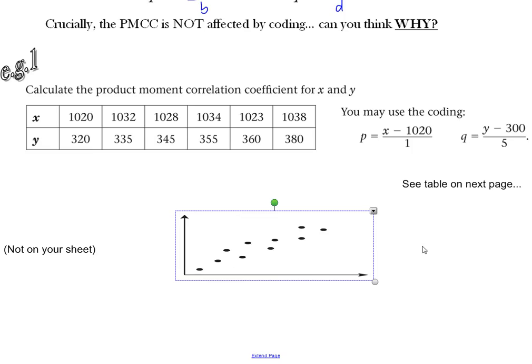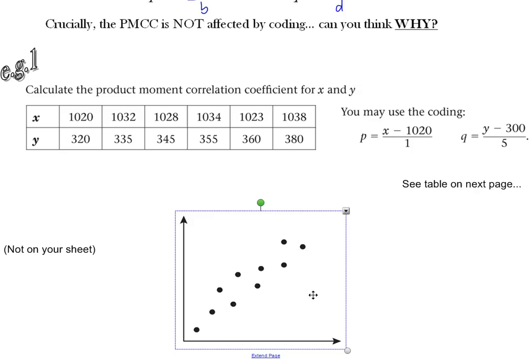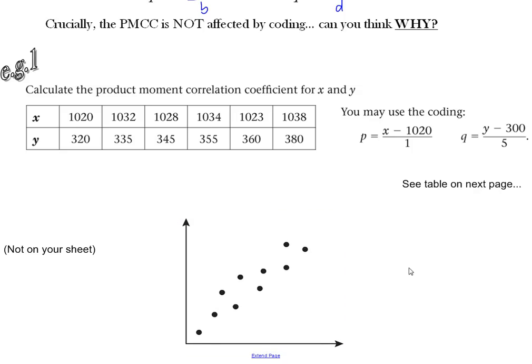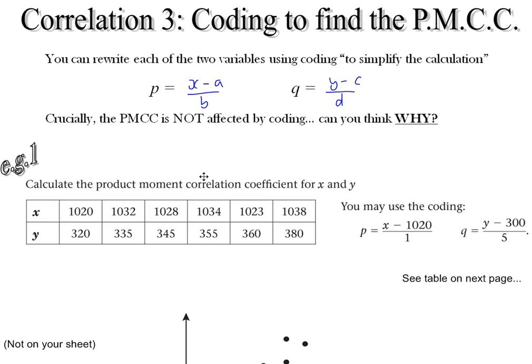Basically, all you're doing is just changing the scales on your graphs. That's just an illustration of why when you code data and you work out the product moment correlation coefficient, that's your answer. You don't need to change it afterwards.